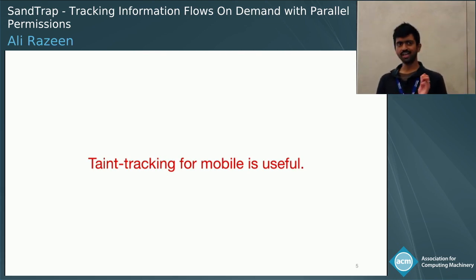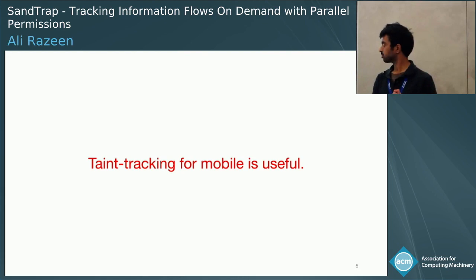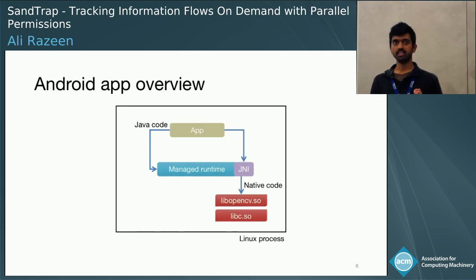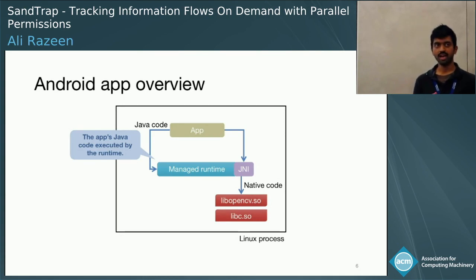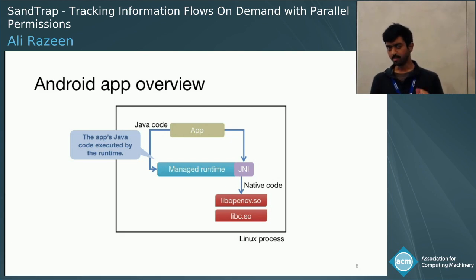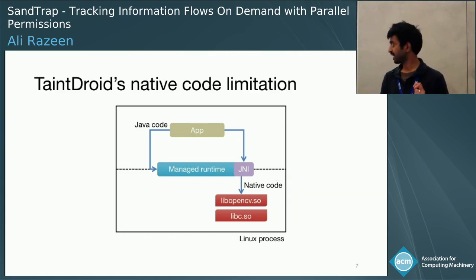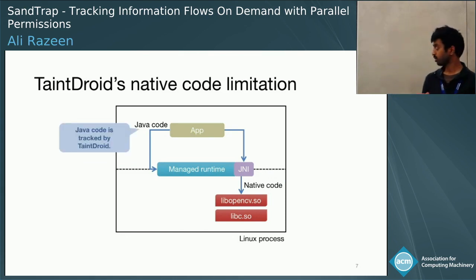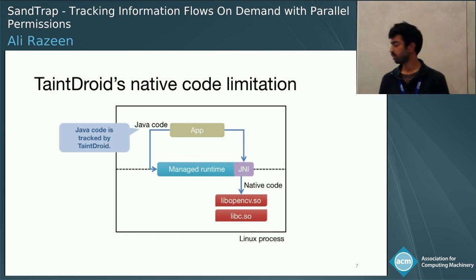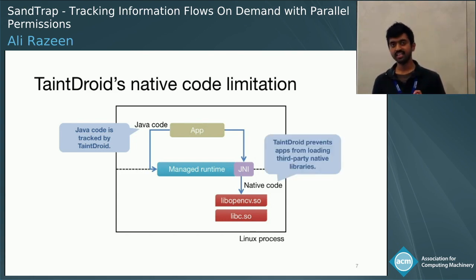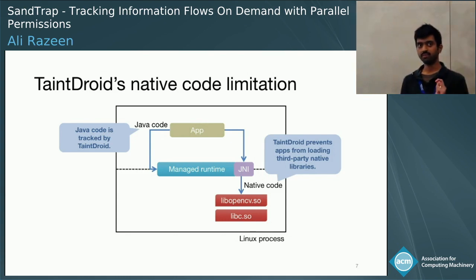However, TaintDroid has a limitation which is becoming more and more severe. To discuss this, I need to dive into some Android app details. An Android app is typically written in Java, and that portion of the app is executed by a managed runtime available in Android. An app can also call native code via the Java Native Interface — code written in C or C++. TaintDroid works exceptionally well at taint tracking the Java bytecode portion of the app, or the managed code portion. However, it does not do any native code taint tracking whatsoever, and in fact it prevents apps from using their own native code. And this is the problem.